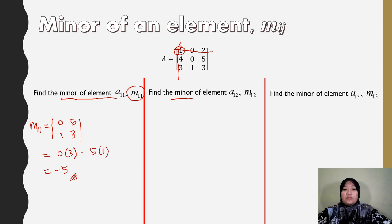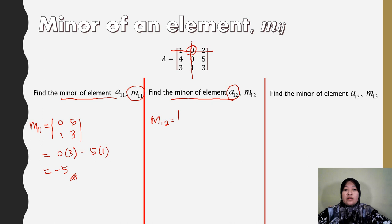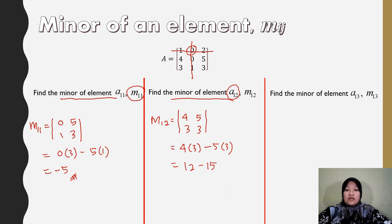Next, find the minor of element A_12. The element at position 1,2 is here. Delete the first row and second column. M_12: put the remaining elements inside the determinant: [4, 5; 3, 3]. Cross multiply: 4 times 3 minus 5 times 3 = 12 minus 15 = negative 3.